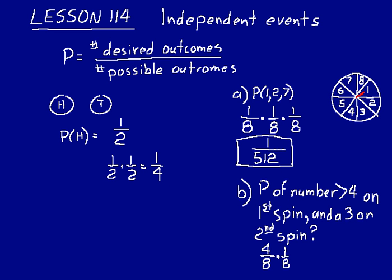One desired outcome over eight possible. We can reduce four over eight to one over two. And we end up with one over sixteen. So if we spun that spinner twice, if we did that experiment of two spins sixteen times, then probably one of those sixteen times we would get that order. A number greater than four on the first spin and a three on the second spin. Probably we would get that.